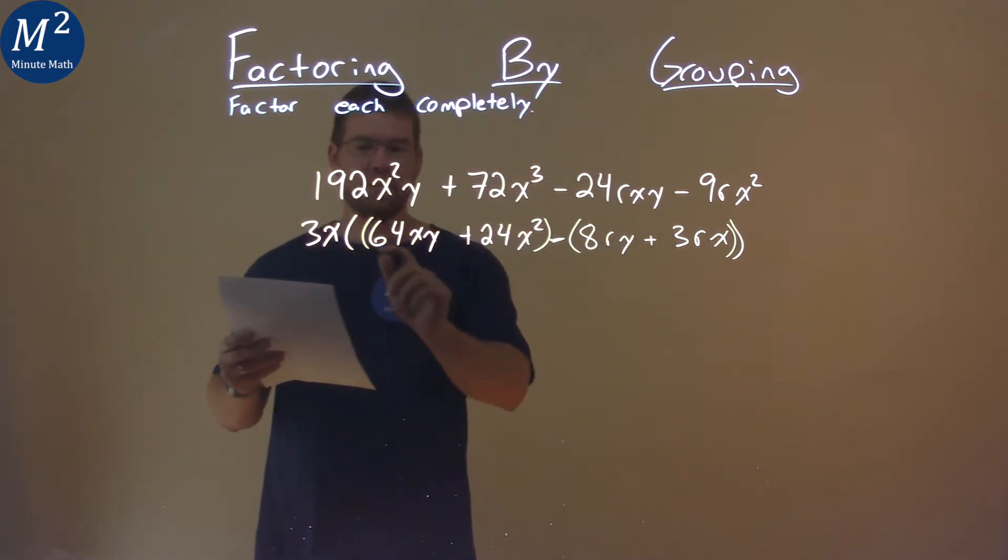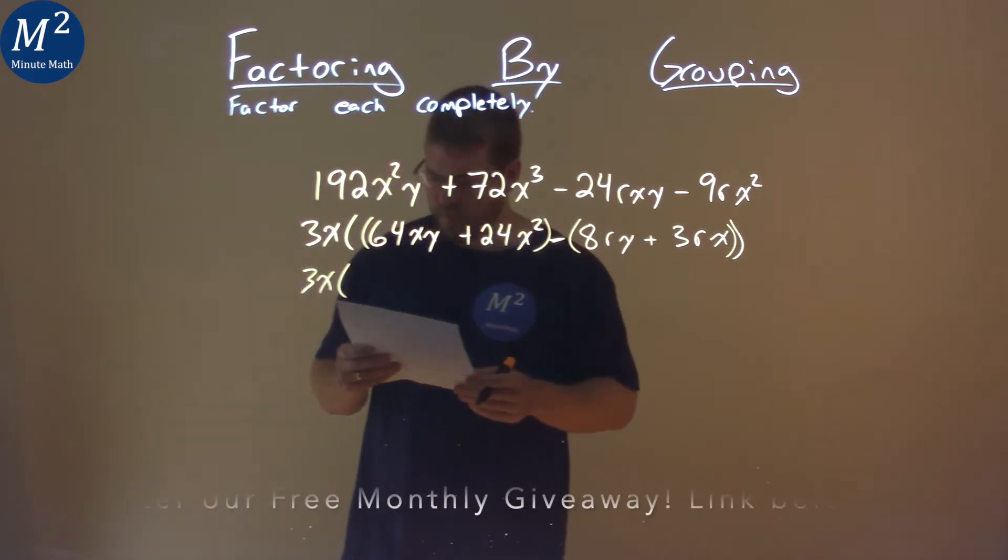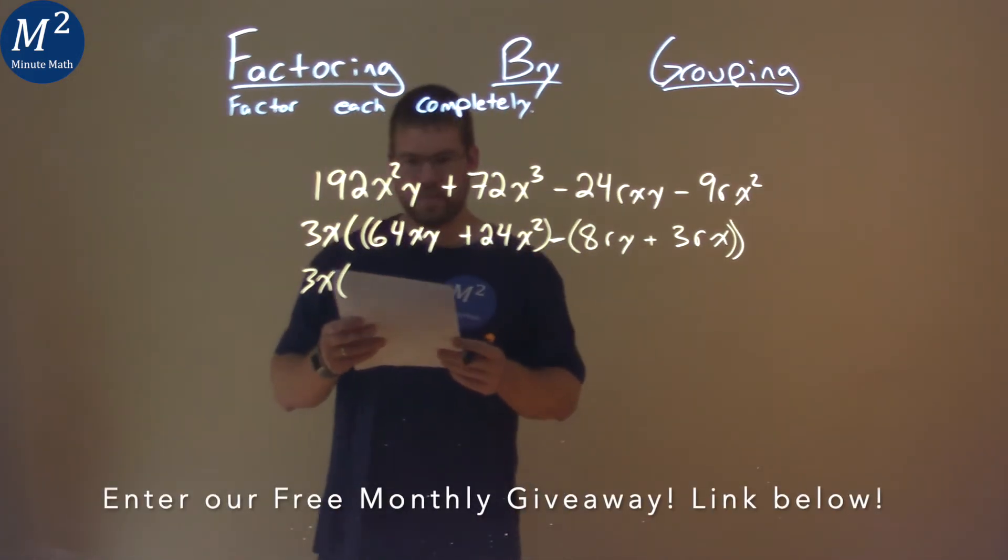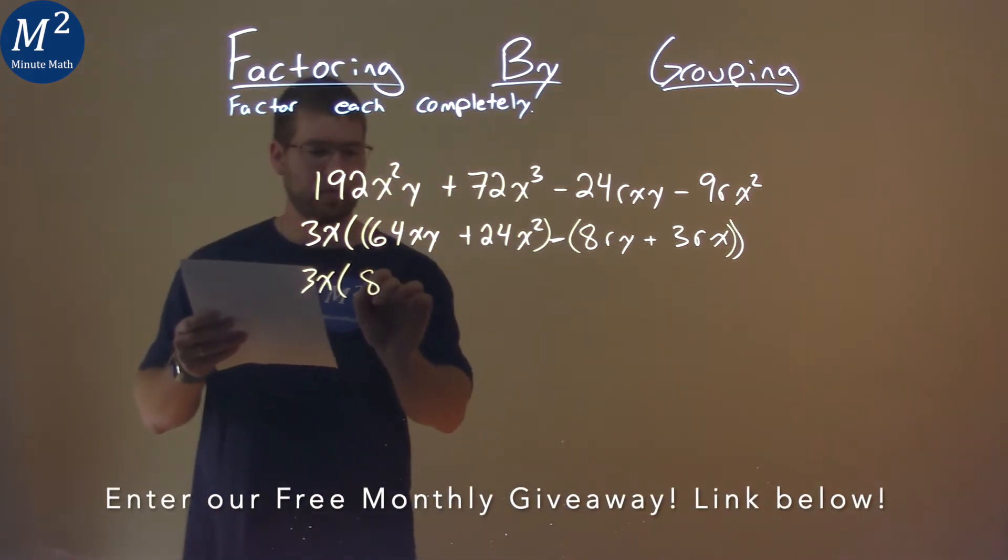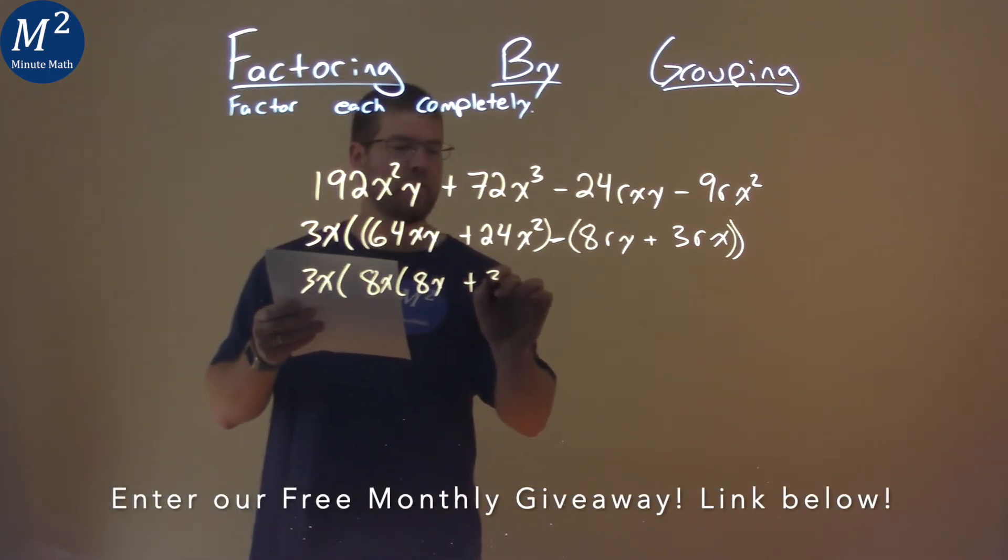All right, so now the 3x just comes down, and what's a common term in 64xy and 24x²? That's going to be an 8x. So I'm going to pull that out, and I'm left with an 8y here plus a 3x.